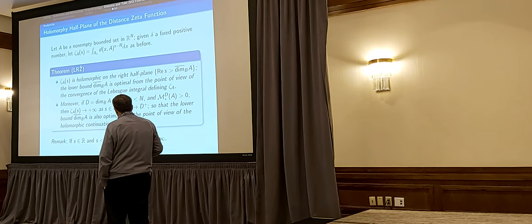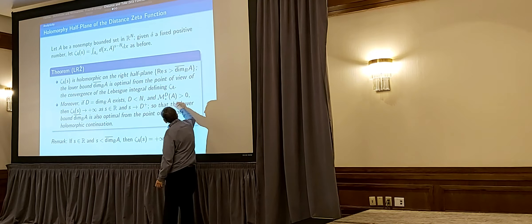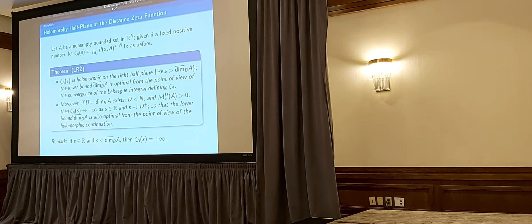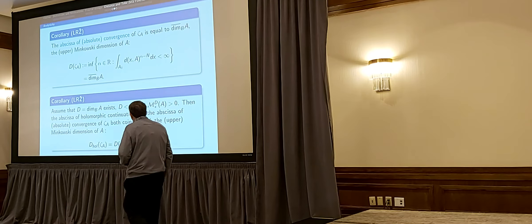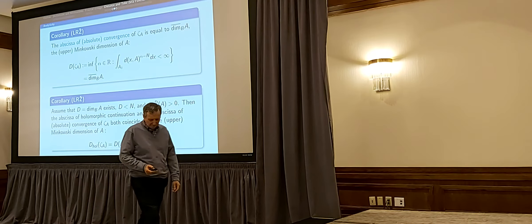In general, the abscissa of holomorphic convergence of the distance zeta function is equal to the upper Minkowski dimension. Under an additional assumption, it also coincides with the abscissa of holomorphic continuation, which is the infimum of those α such that the zeta function can be meromorphically continued to Re(s) > α. We don't know if the conditions in the third part of the theorem are necessary — I suspect they are.